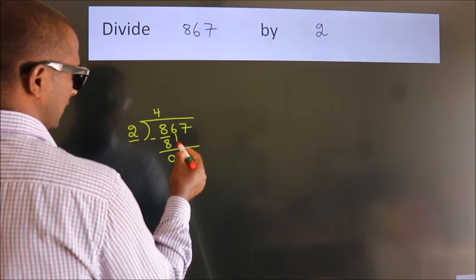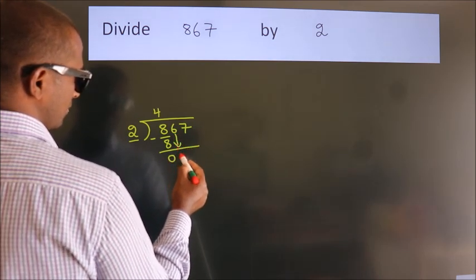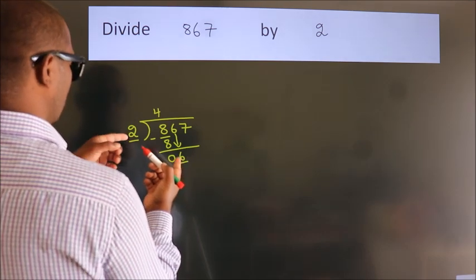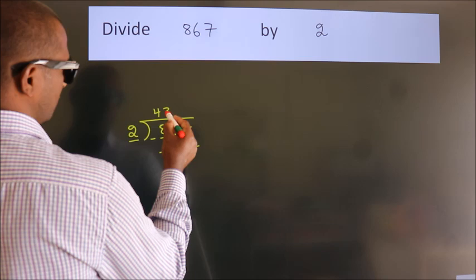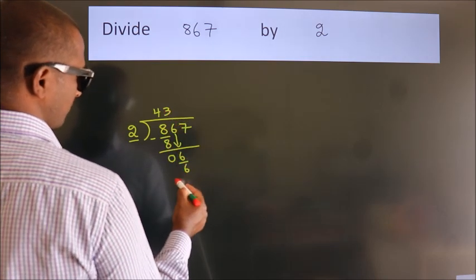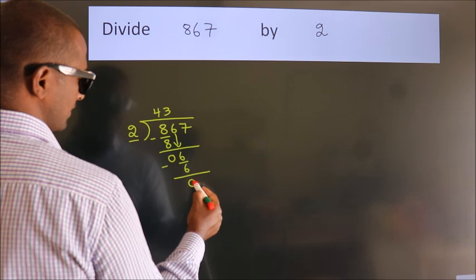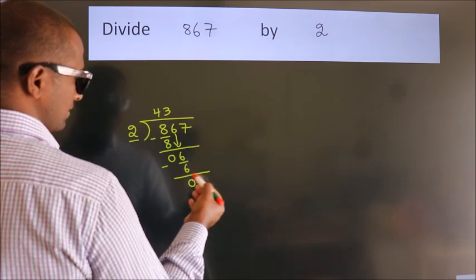After this, bring down the beside number. So, 6 down. When do we get 6? In 2 table. 2 threes, 6. Now, we subtract. We get 0.